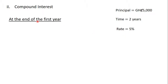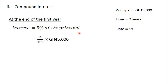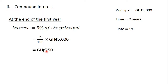At the end of the first year, Alabad's interest is equal to five percent of the principal. The principal is five thousand Ghana cedis, so five percent of five thousand Ghana cedis is the same as five divided by 100 times five thousand Ghana cedis. This gives us two hundred and fifty Ghana cedis. So at the end of the first year, the interest on the principal is two hundred and fifty Ghana cedis.